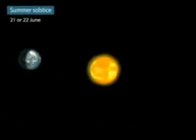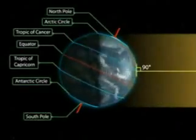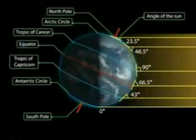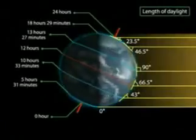Summer Solstice: on the 21st or 22nd of June, the overhead Sun is over the Tropic of Cancer. It receives the largest amount of solar radiation. At this time, the Northern Hemisphere is in the Summer Solstice, while the Southern Hemisphere is in the Winter Solstice. The angle of the Sun decreases towards the poles. On this day, the length of daytime in the Northern Hemisphere is the longest in the year, while that of the Southern Hemisphere is the shortest. Besides, there are 24 hours of daylight at the Arctic Circle and 24 hours of darkness at the Antarctic Circle.